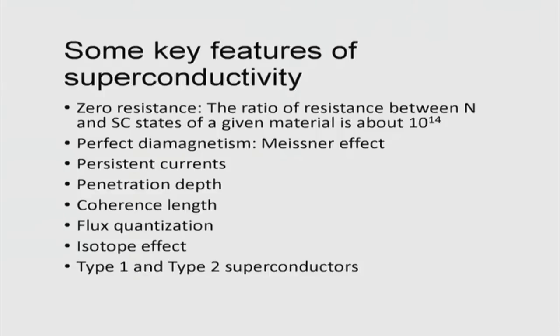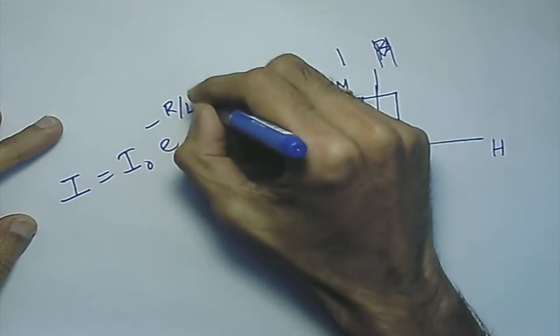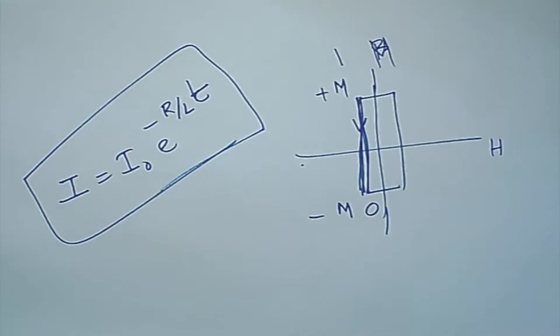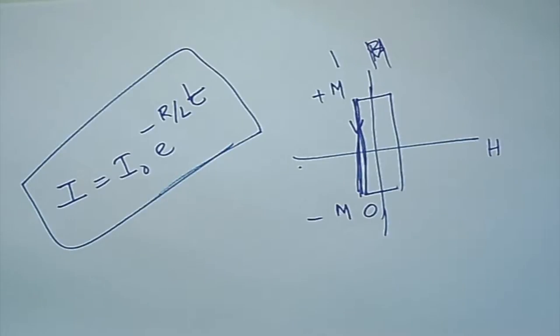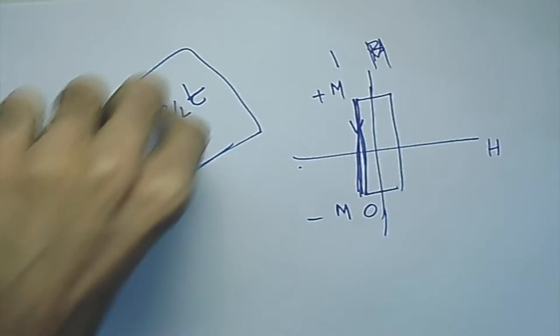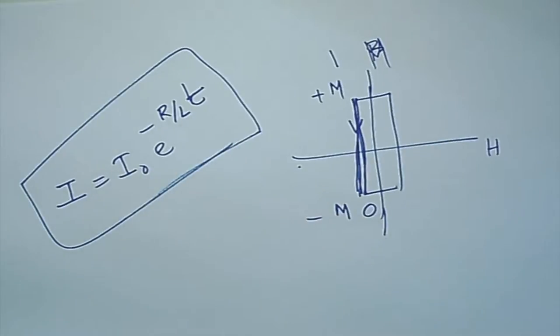There was a question: how are you sure that resistivity has actually become zero? Because experimentally there are limitations. What is done is this: in a superconducting circuit, the current is found to decay over time. The current decay follows an L/R time constant, where R is a very small resistance and L is the inductance of the circuit. By observing the decay and measuring the time it takes, you can find out what the resistance is. So when we say resistance becomes zero, it is found by measuring how long it takes for the current to reach very small values.